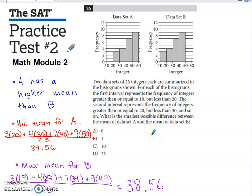I just glanced at the two histograms and realized that because data set A has nine values somewhere between 50 and 59, and data set B doesn't have any values between 50 and 59, I know that the mean of data set A is going to be bigger than the mean of data set B.